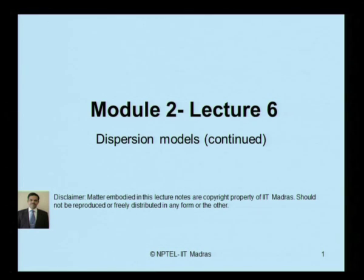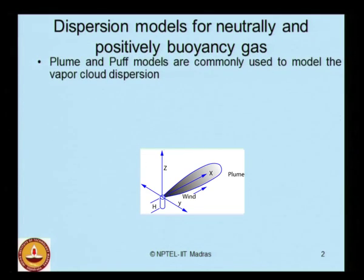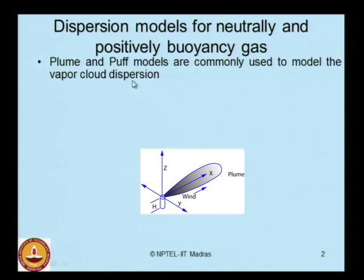The sixth lecture is focused on the continuation of the dispersion models discussed in lecture 5 in module 2. Dispersion models for neutrally and positively buoyant gas will be discussed. The most commonly used models for positively buoyant gas are the plume model and puff models, which are commonly used to discuss vapor cloud dispersion.